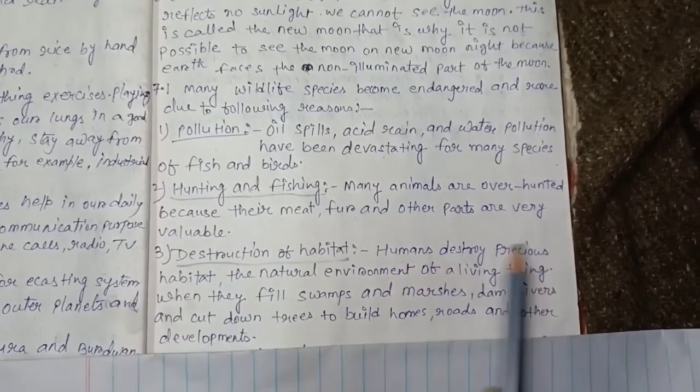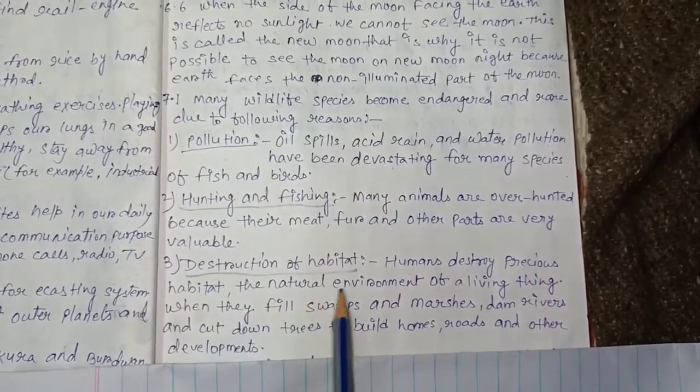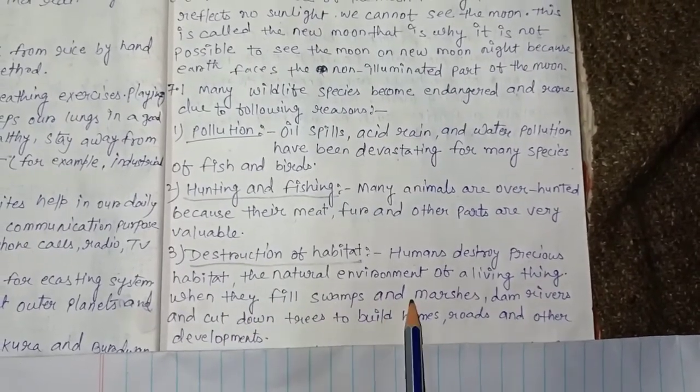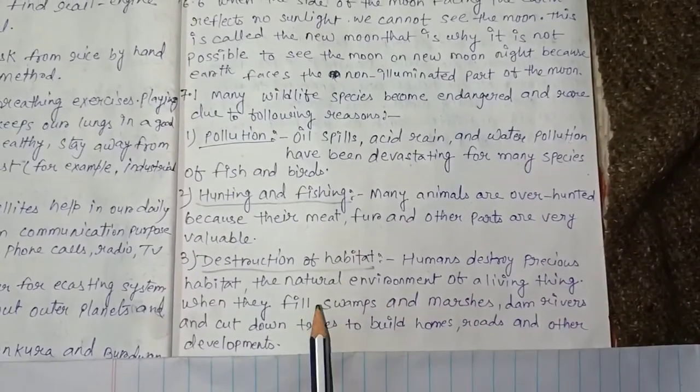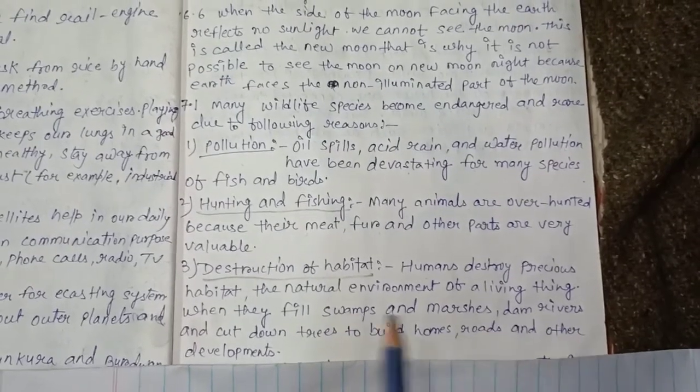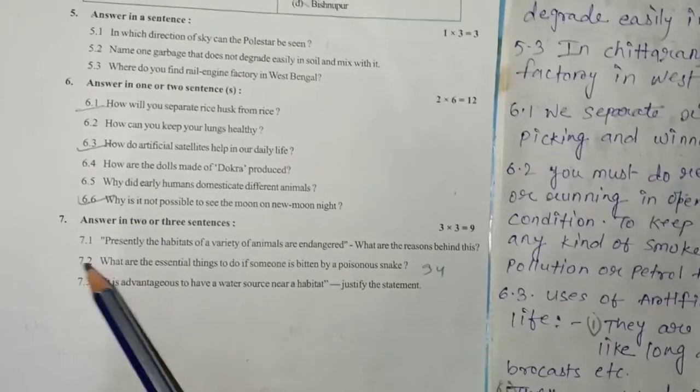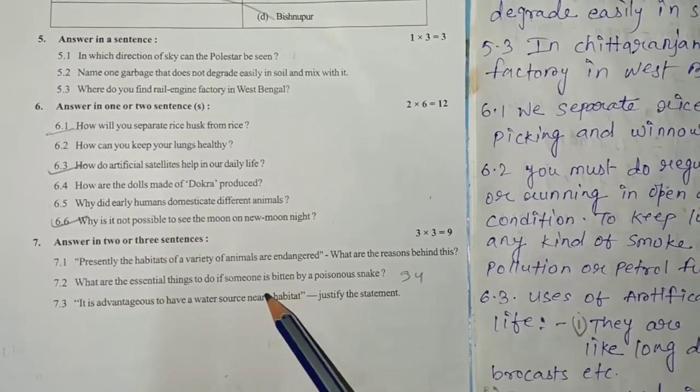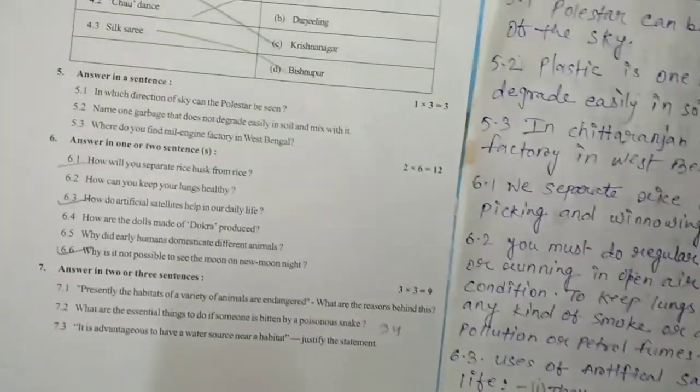Point 3 - Destruction of habitat: humans destroy precious habitat, the natural environment of a living thing, when they fill swamps and marshes, dam rivers, and cut down trees to build homes, roads, and other developments. 7.2: What are the essential things to do if someone is bitten by a poisonous snake?